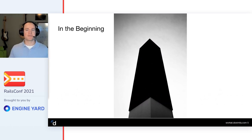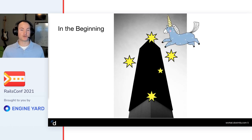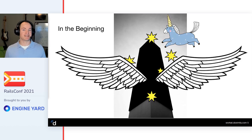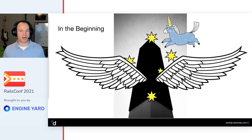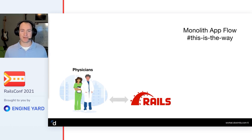In the beginning, before we had all the teams and all the microservices, we had the monolith. And our monolith was quite majestic - sparkly, had unicorns, and had sprouted wings at some point. In a monolith app, all that we really care about is that we're able to serve our users - for us, physicians. They don't care about all the stuff we're doing; they just want to access the data they want whenever they want it.